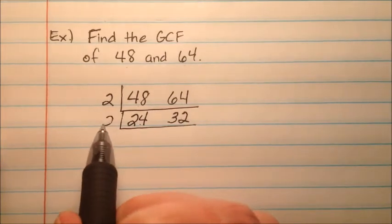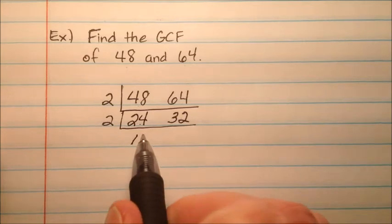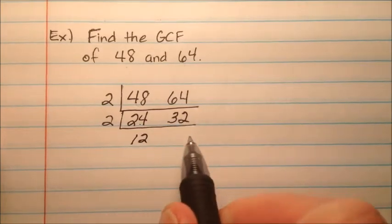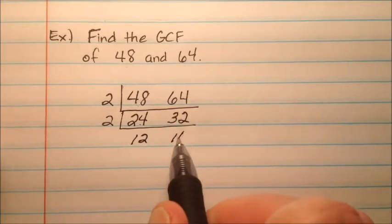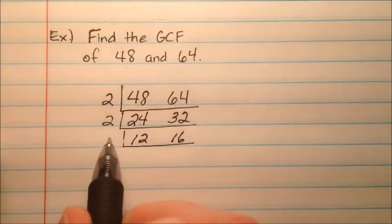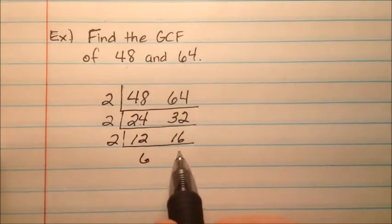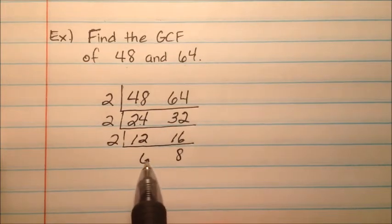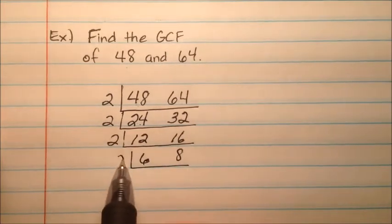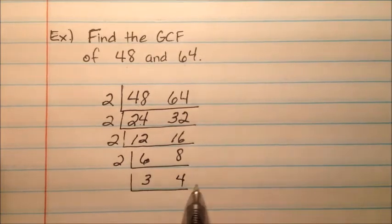They're both still even, so 24 divided by 2 is 12, and 32 divided by 2 is 16. Once again, they're still both even, so I can say 12 divided by 2 is 6 and 16 divided by 2 is 8. And 6 and 8 are still even, so 6 divided by 2 is 3 and 8 divided by 2 is 4.